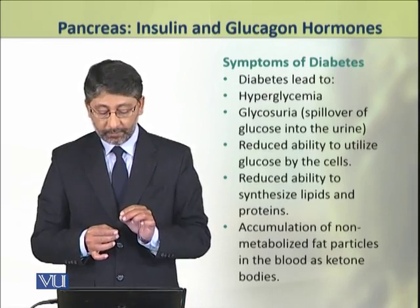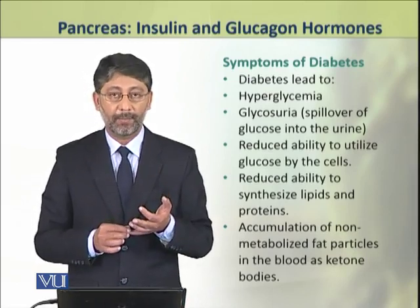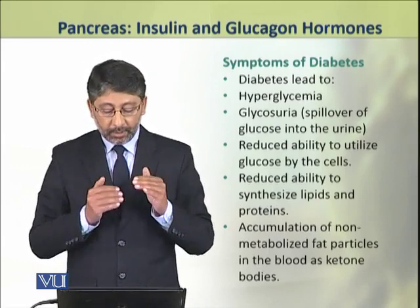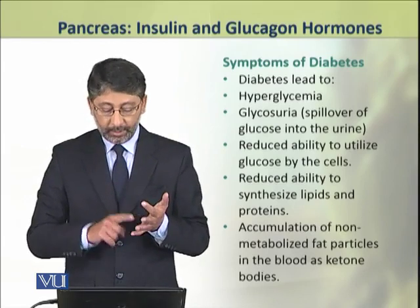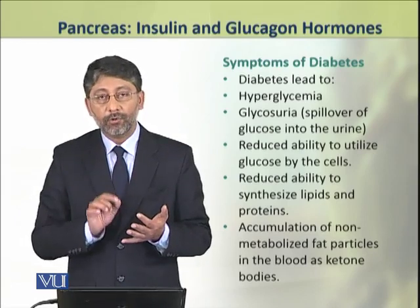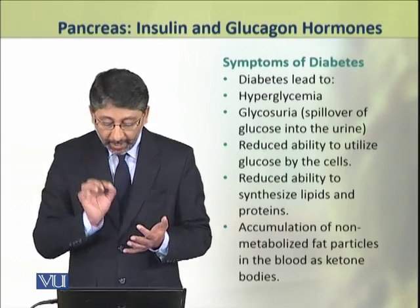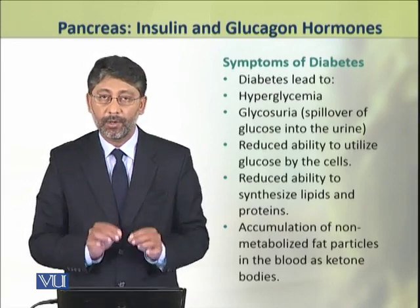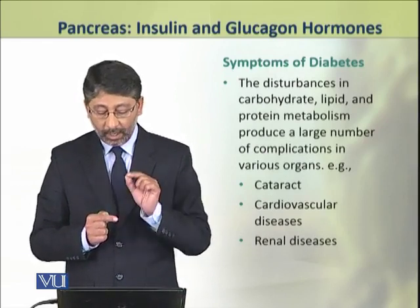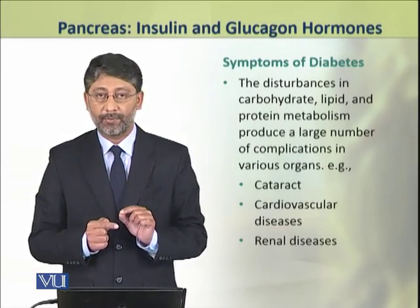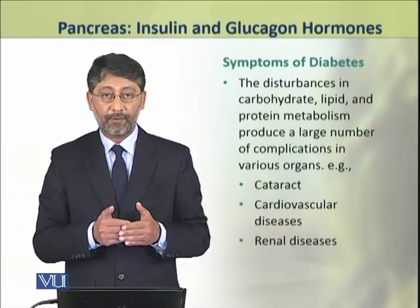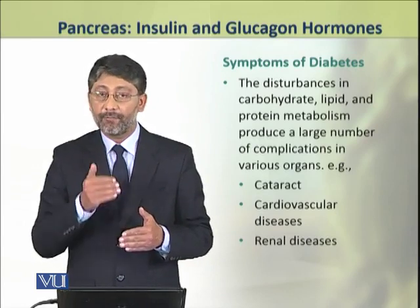Diabetes leads to hyperglycemia, that is high blood glucose level; glycosuria, that is glucose in the urine; reduced ability to utilize glucose by the cells; and reduced ability to synthesize lipids and proteins. There is also accumulation of non-metabolized fat particles in the blood which appear as ketone bodies. These all result from disturbances of carbohydrate, lipid, and protein metabolism controlled by insulin.